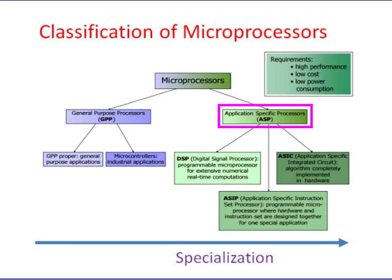Devices such as TVs, cell phones, and GPS all have a form of application specific processor. An application specific processor combines high performance, low cost, and low power consumption. Application specific processors fall into three categories.